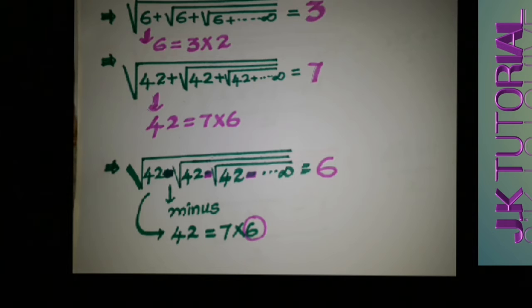For the square root of 42 going to infinity with all plus signs, we write 42 as the product of two consecutive numbers: 7 times 6. We take the larger value, 7, as the answer. However, for the square root of 42 minus 42 minus 42 continuing to infinity, we again write 42 as 7 times 6, but we take the smaller value, 6, because of the negative signs.